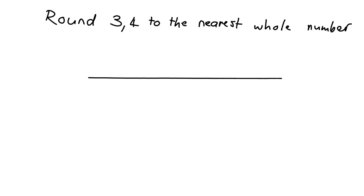Which ones are close to 3.4? Well, obviously the ones that are close to 3.4 are 3 and 4. When we're looking at what's closest, what we need is the halfway mark. The halfway mark between 3 and 4 will be 3 and a half — 3.5.